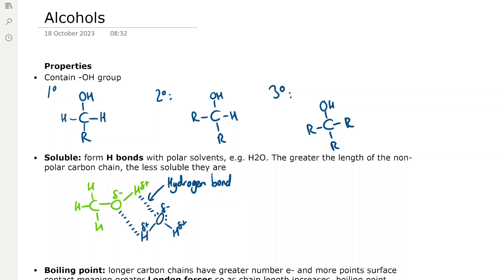Alcohols are soluble in polar solvents because they can form hydrogen bonds with polar solvents, for example water. The greater the length of the non-polar carbon chain, the less soluble they are, because the non-polar carbon chain is hydrophobic.